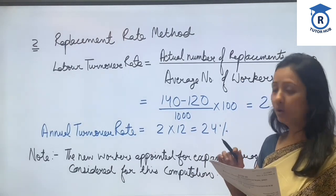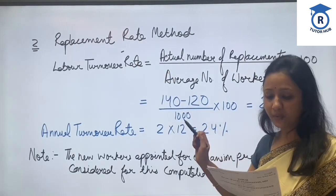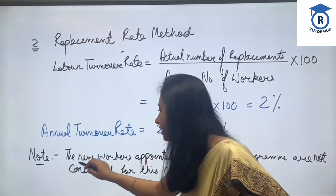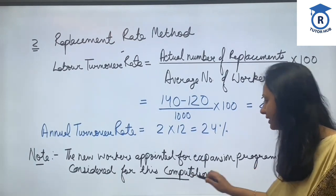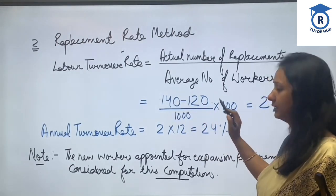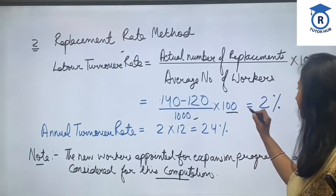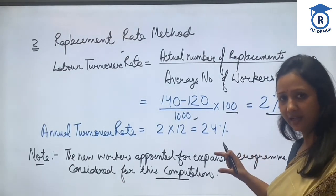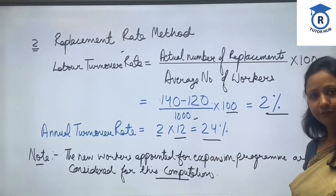Out of 140 recruited, 120 were under the expansion plan. Note: new workers appointed for the expansion program are not considered for this computation. So we subtract 120 from 140, giving 20 replacements. Therefore: 20 divided by 1000 (average workers) multiplied by 100 equals 2% monthly rate. The equivalent annual rate is 2 multiplied by 12, which is 24%.